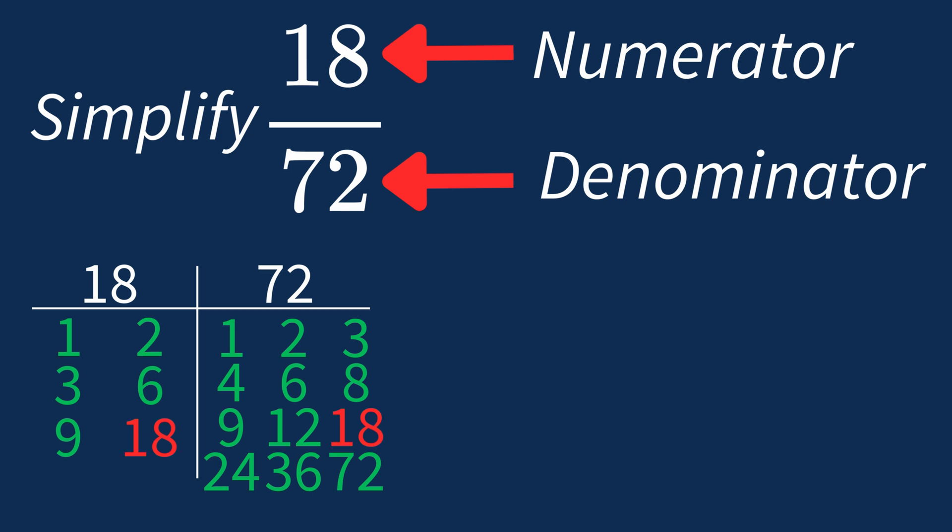This means we can divide both the numerator and denominator by 18 to simplify the fraction. Dividing the numerator 18 by 18 gives us 1. Dividing the denominator 72 by 18 gives us 4.